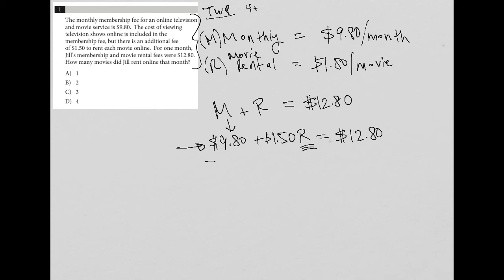So to do this, I'm going to isolate R by subtracting $9.80 from both sides of the equation. By doing that, my $9.80 crosses out on the left side. I have $1.50 times R is equal to $12.80 minus $9.80.